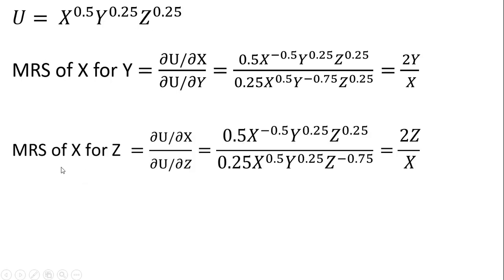Here's the marginal rate of substitution of x for z. You can see the partial derivatives here. The numerator is exactly the same as our first example. In terms of the denominator, we look at the z term. We take the partial derivative of that — we take this exponent and bring it down in front, so that's why we have 0.25 down here now. We don't have to do anything with the x or y terms. But for the z term, we need to subtract 1 from the exponent, so 0.25 minus 1 is why z is now raised to the minus 0.75 power.